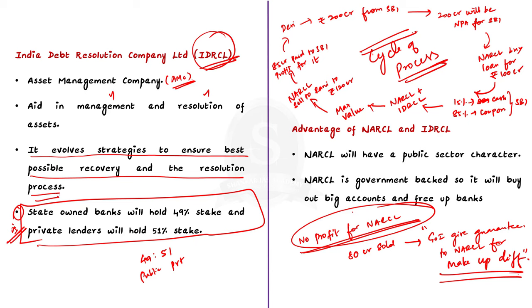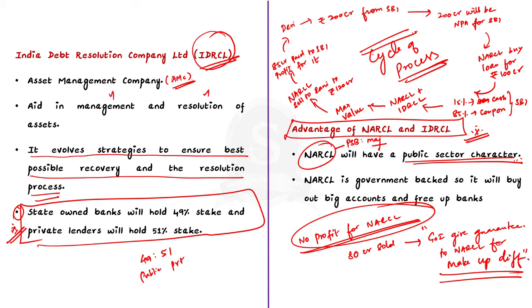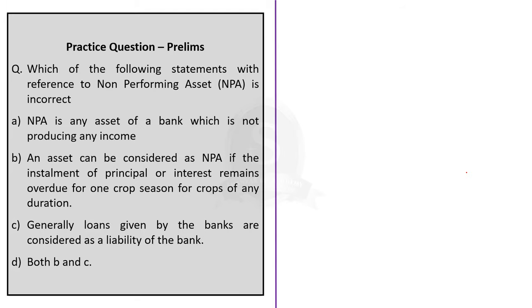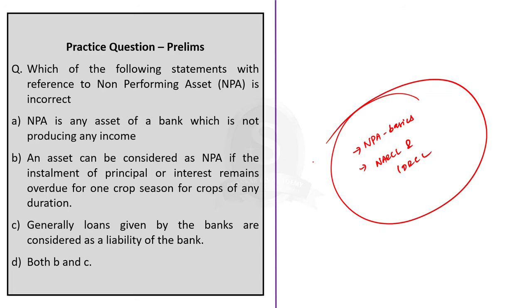Finally, let us see how NARCL is different from the already existing ARCs. In NARCL, the public sector banks are the majority stakeholders, so it will have a public sector character. At present, ARCs are trying to take a steep discount on loans. But since NARCL is government-backed, it will have deep pockets — that is, substantial financial resources at its disposal. This is used to buy out big accounts, thereby freeing up the balance sheets of the banks. In this discussion, we saw about the basics of non-performing assets and the working principles of NARCL and IDRCL.